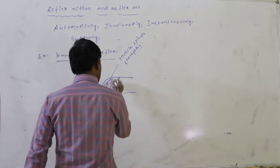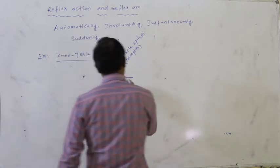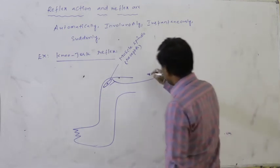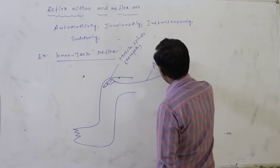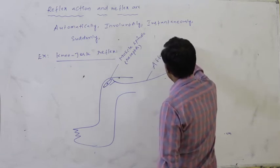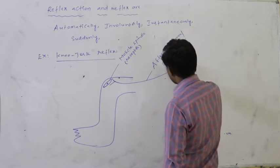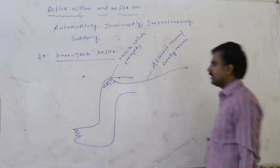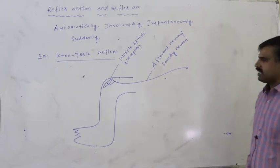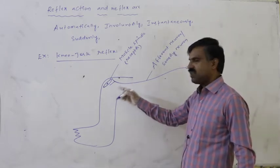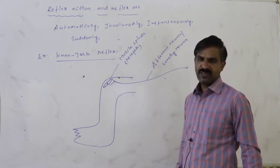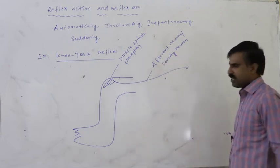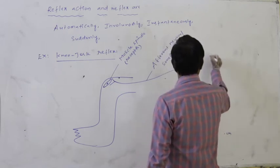From this muscle spindle, information is connected to the sensory neuron — that is said to be the afferent neuron, also called the sensory neuron. The muscle spindle present in the leg of the person receives information from the external environment. That information is connected to the afferent or sensory neuron.